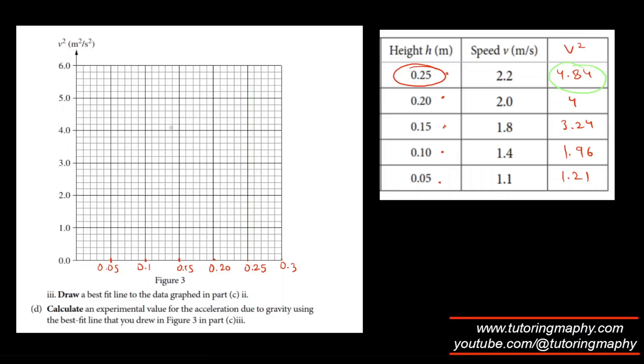The first point is 0.25 and then 4.84. So 0.25 is on this axis, and 4.84—I know that this is 4.2, 4.4, 4.6, 4.8, so 4.84 is probably somewhere over here. Then I have 4. 4 is over here on the y-coordinate, and 0.2 is over here, so that should be the point.